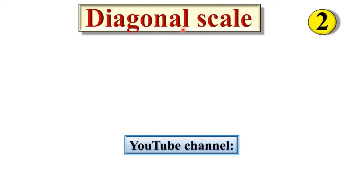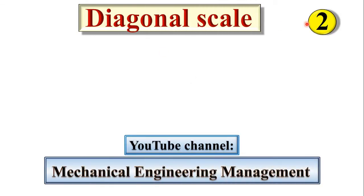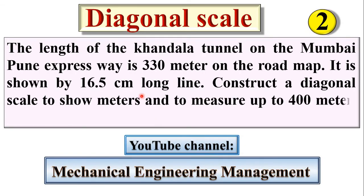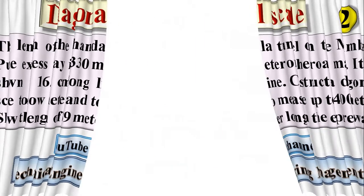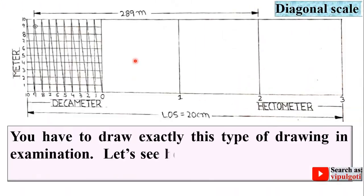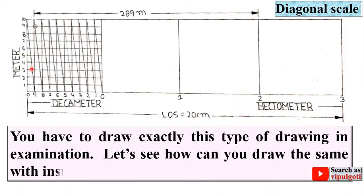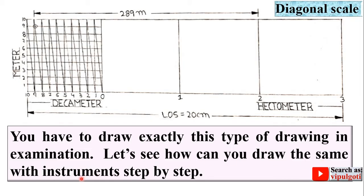Today we are going to discuss diagonal scale — this is the second problem from the diagonal scale. This is the problem we are going to solve today, and this is the output, meaning the solution. In the examination you have to draw like this. Let's see how you can draw the same with the instrument, step by step.